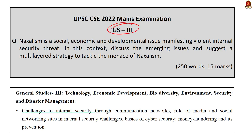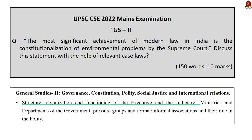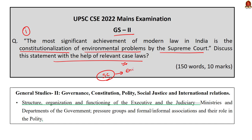Having seen the questions reflected from GS Paper 3, let us move on to GS Paper 2. Question number 1 in GS Paper 2: 'The most significant achievement of modern law in India is constitutionalization of environmental problems by the Supreme Court. Discuss this statement with the help of relevant case law.' The examiner is asking how through various judgments the Supreme Court has taken steps to address environmental problems. For example, the Vishaka guidelines introduced by the Apex Court in 1997 led to the government enacting the Sexual Harassment of Women at Workplace Act of 2013 — similarly this question asks for examples of constitutionalization of environmental problems.